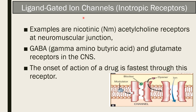Ligand-gated ion channels have two types: excitatory and inhibitory. An example is the nicotinic receptor at the acetylcholine neuromuscular junction, which is excitatory — when the ion channel opens, it increases the flow of sodium into the cell, increasing positivity and causing depolarization. Another example is the GABA and glutamic acid receptors, which are inhibitory. When the ion channel opens, it increases the flow of chloride into the cell, causing hyperpolarization. The onset of drug action is fastest at this receptor because it depends on ion flow only.